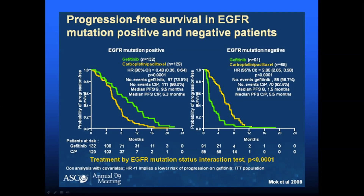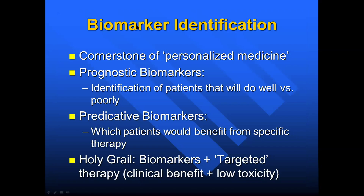All of these are biomarkers — the cornerstone of personalized medicine. There are two types: a prognostic biomarker differentiates which patients are going to do well versus poorly. A predictive biomarker predicts which patient would benefit from a specific therapy. In targeted therapy, the holy grail is a biomarker and targeted therapy combination that has high clinical benefit and low toxicity.